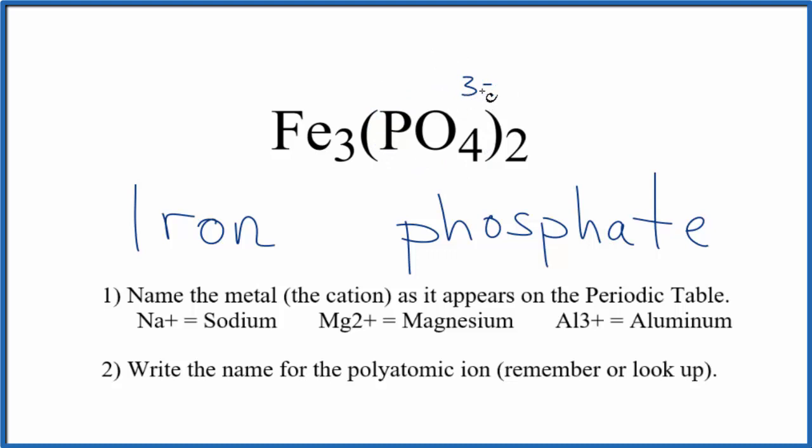So this is a good one to remember. We have two of these phosphate ions here. Two times three minus, that gives us a six minus. So we need a six plus for all the ionic charge to add up to zero, to have a net charge of zero. Three times some number would give us a six plus.